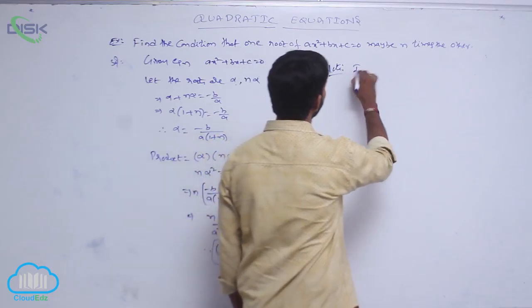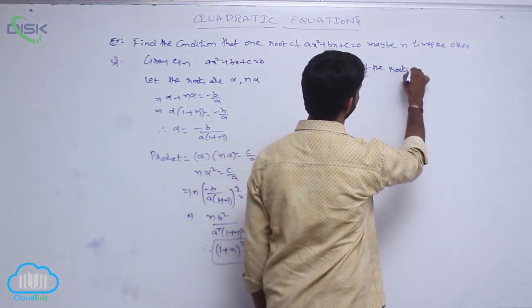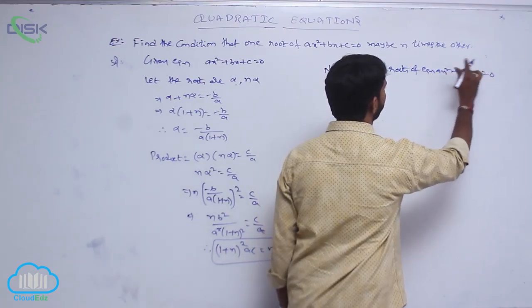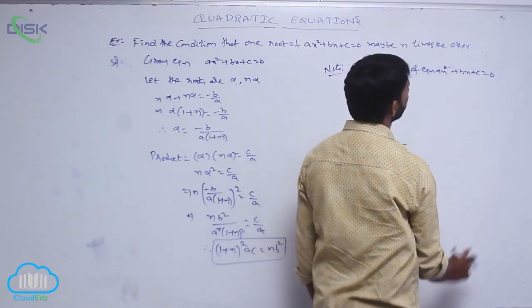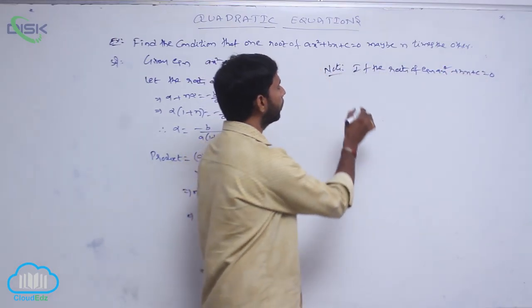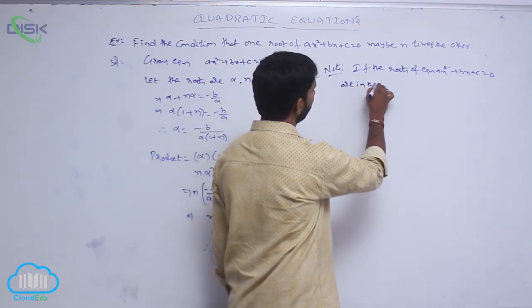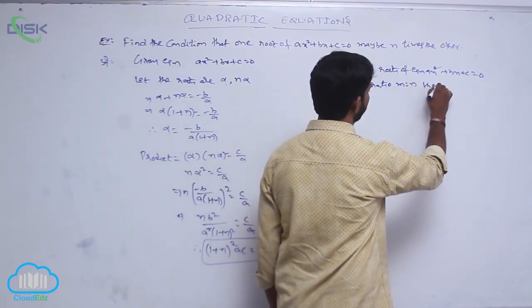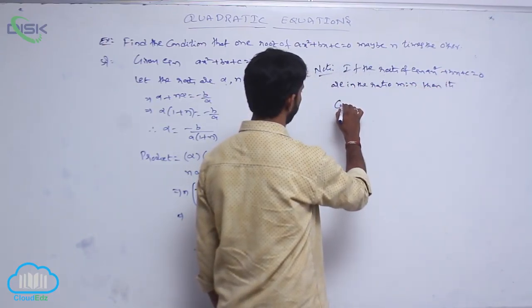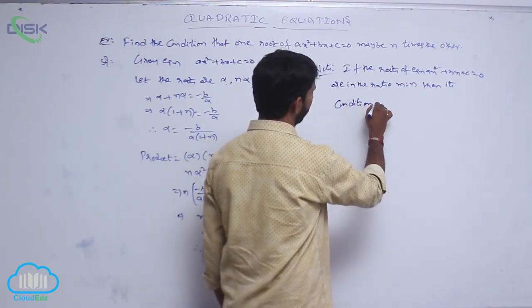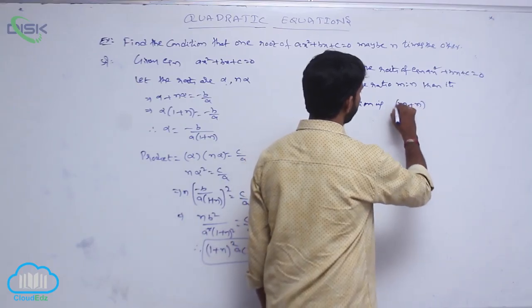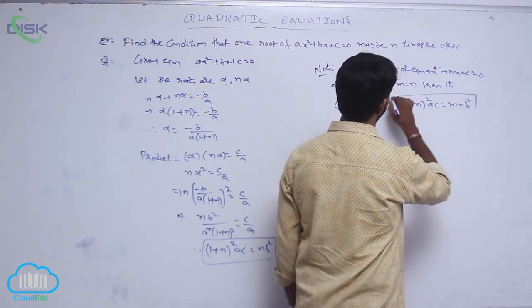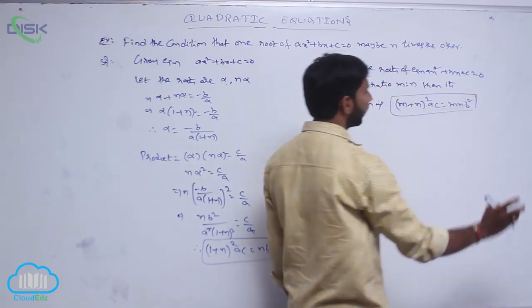Note: if the roots of the equation ax² + bx + c = 0 are in the ratio m : n, then the condition is (m + n)²·ac = mn·b².